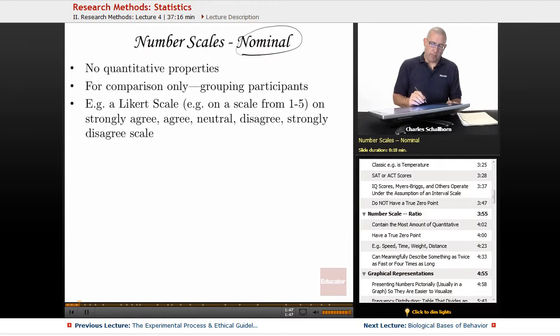Nominal scales are interesting because they don't have any quantitative properties. They're for comparison only. And one of the ways is to use what's called a Likert scale, a term that you will probably, if you become a psych major, you'll find out about. But it's a scale, for example, one to five, one to seven, that you're agreeing, strongly agree, neutral, disagree, strongly disagree. That kind of a scale.